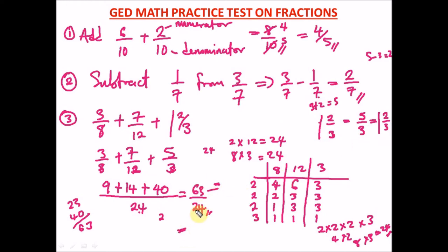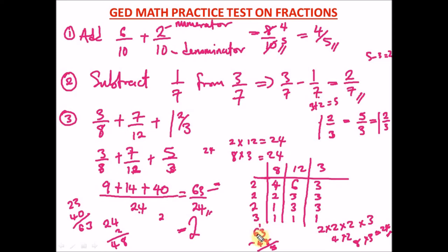To convert 63 over 24 to a mixed fraction: how many times does 24 go into 63? Not more than 2 times. 2 times 24 is 48. Subtract: 63 minus 48 is 15. So we have 2 whole number and 15 over 24.